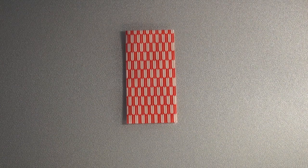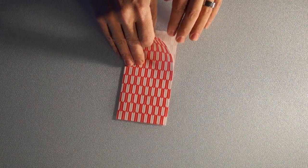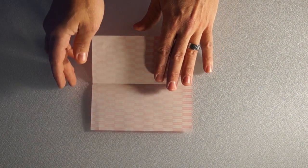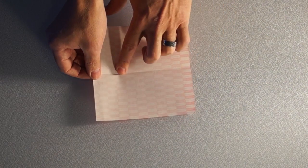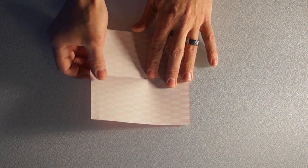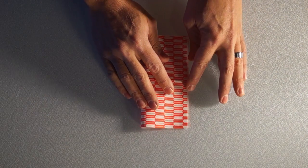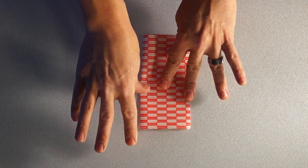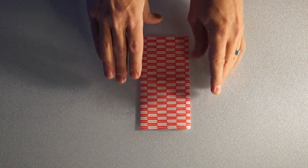So now that we've folded this in half, we're going to unfold it. And we are going to fold it in half, turn the paper 90 degrees and fold it in half again. So we're actually going to be making a plus sign with the folds that we've made.